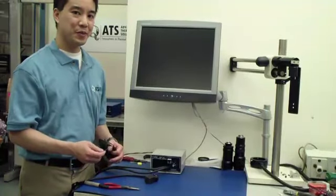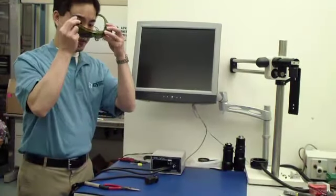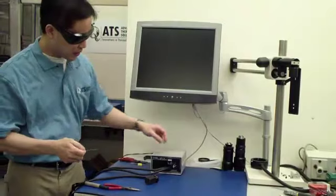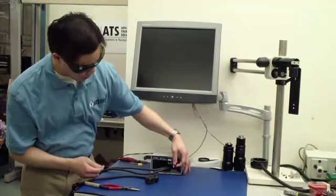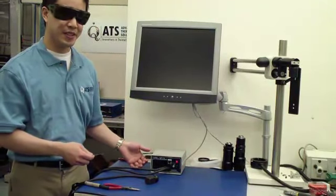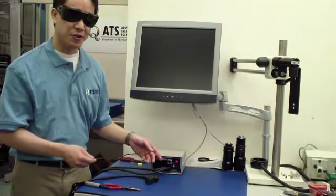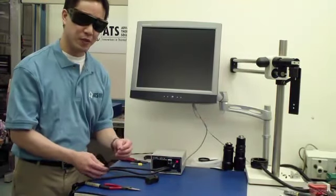Now that we're ready to spot weld the thermocouple together, we're going to put our safety goggles on. Next, we'll turn the spot welder on to a medium setting. It has a warning buzzer to let you know it's ready to fire, and the power setting you use will be determined by the gauge of the thermocouple wire.